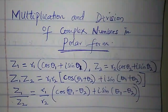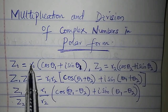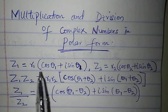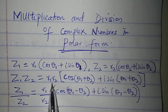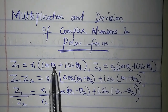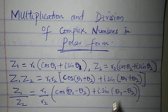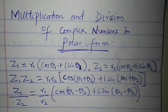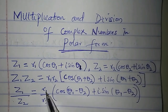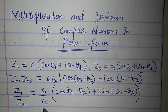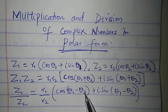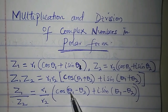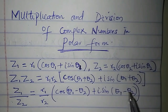For multiplication, multiply the moduli — that's r1 times r2 to obtain r1·r2 — then add the arguments. That's the principle for multiplication. For division, divide the first modulus by the second modulus, and then subtract the second argument from the first.